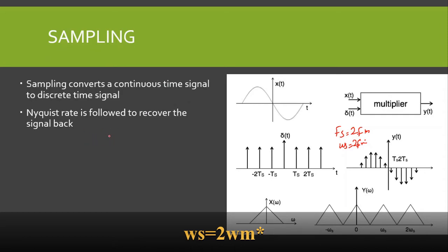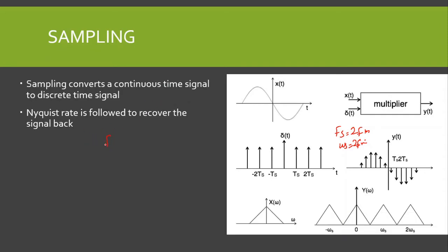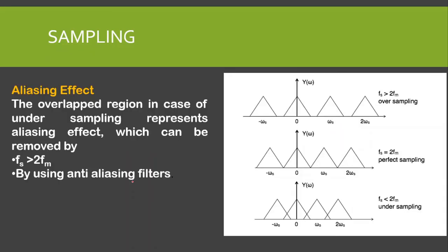The Nyquist rate is followed for sampling. The Nyquist rate states that the sampling frequency must be greater than or equal to two times the maximum frequency. In this case, we have this type of spectrum because we have taken Fs equal to 2Fm. Now, if we don't follow the sampling rate — that is, if Fs is less than 2Fm — then we have overlapping.